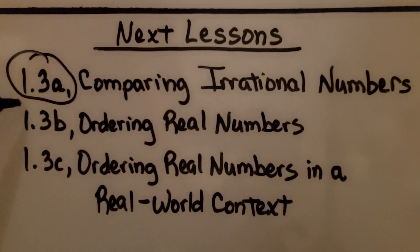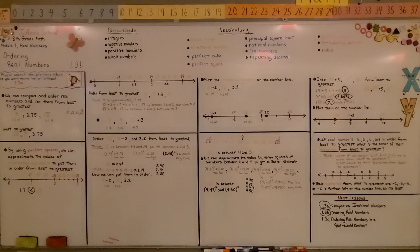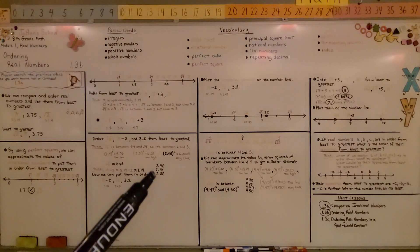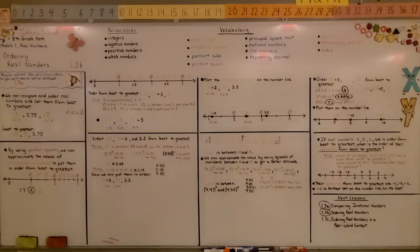We're finished with 1.3b and moving on to the last part of the lesson: ordering real numbers in a real world context. Remember to use perfect squares to help you put them in order, and remember that you can play with the decimals — finding decimal numbers between your estimates to get closer to a good approximation.